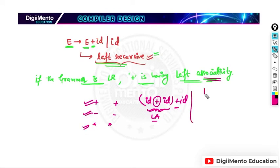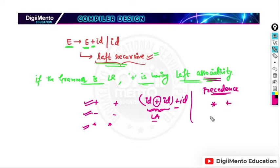Whenever we talk about associativity, we are talking about similar operators. Whenever we talk about precedence, we are talking about different operators — maybe star and plus, or star and exponential, or plus and minus.